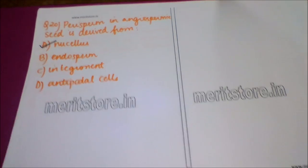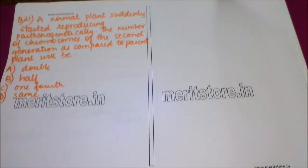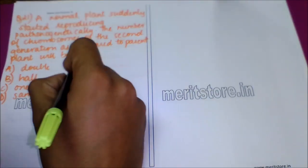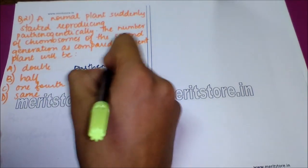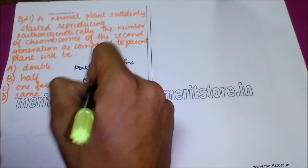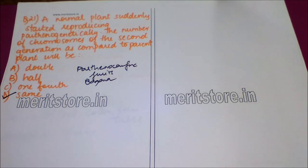A normal plant suddenly started reproducing parthenogenetically. The number of chromosomes in the second generation compared to the parent plant will be? Option A: double. Option B: half. Option C: one-fourth. Option D: the same. Parthenocarpy is a phenomenon wherein seeds are not produced, exhibited by fruits like banana where there are no seeds. The correct answer is option D — the number of chromosomes remains the same under parthenogenetic conditions because the male and female gametes do not combine, so chromosome number remains unchanged.